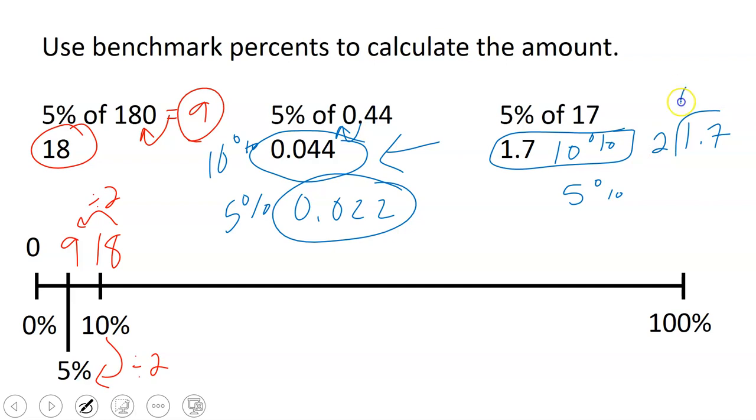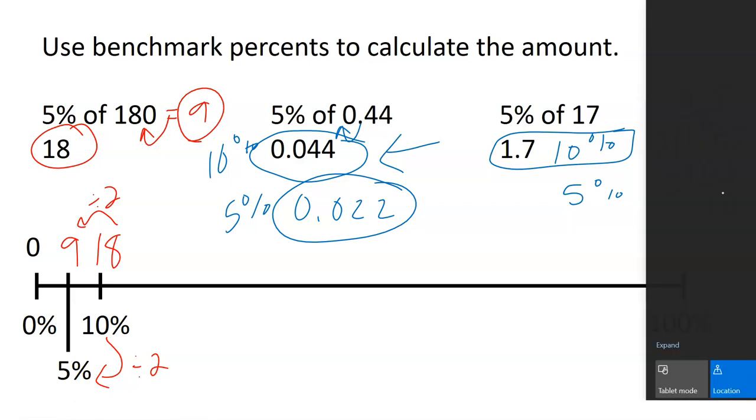So 2 goes into 1, 0 times. We bring the decimal up to the top. 2 goes into 17, 8 times, because 8 times 2 is 16. 17 minus 16 is 1. I need to bring a 0 down, so I add a 0, bring it down. 2 goes into 10, 5 times.